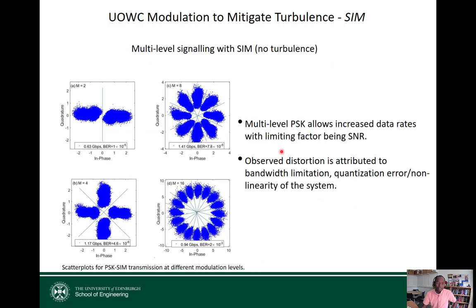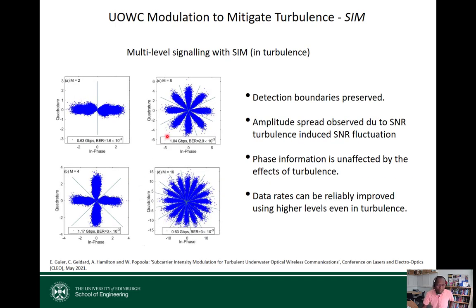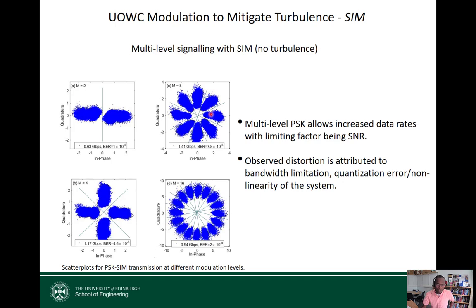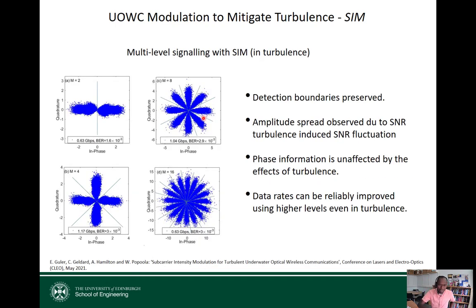We can also use multi-level SIM. With two, four, six, and eight phase levels (PSK-SIM), in the absence of turbulence all phases are clearly distinguishable with clean decision boundaries. When turbulence sets in, the phase constellations remain clear and boundaries are still distinguishable across all modulation orders — two, four, six, and eight. Although signals spread slightly toward the center due to SNR variation, the phase information is preserved.